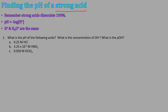Finding the pH of a strong acid: the first thing you have to do is determine whether the acid is strong or weak. If it's strong, use this method. Remember that strong acids dissociate 100%, the pH is the negative log of the H⁺ concentration, and the hydrogen and hydronium concentrations are the same.